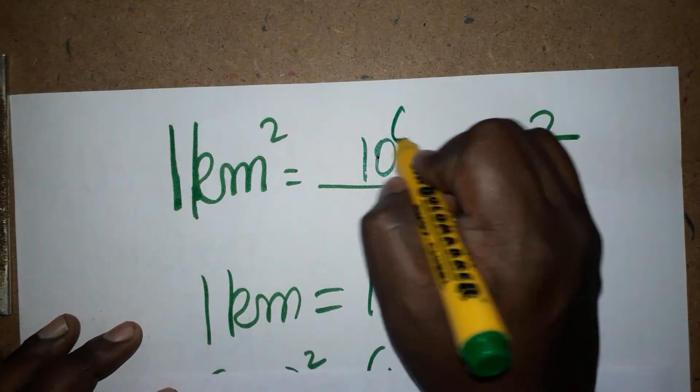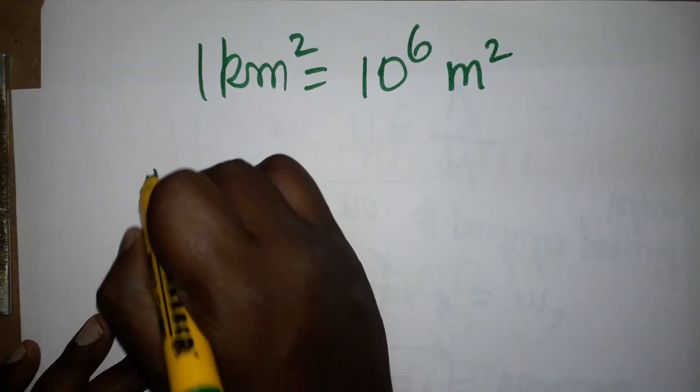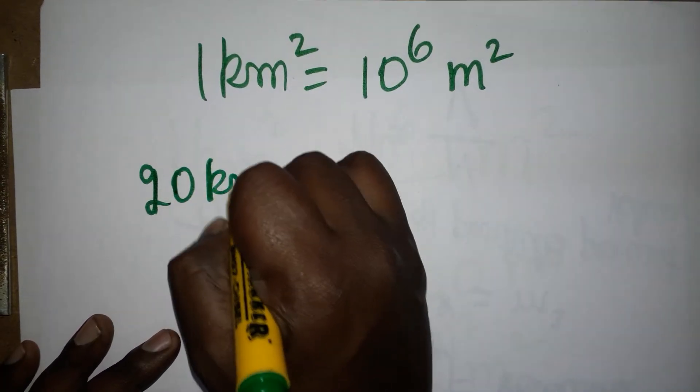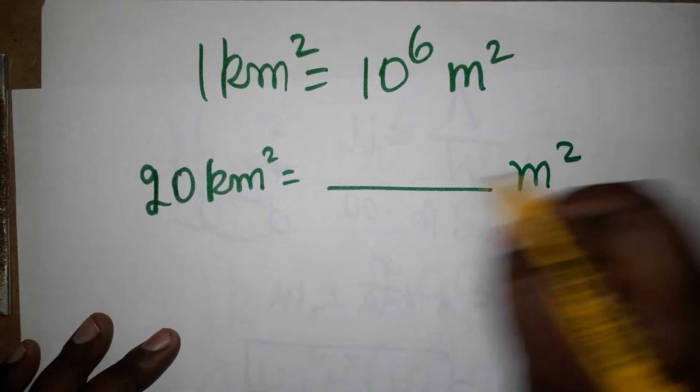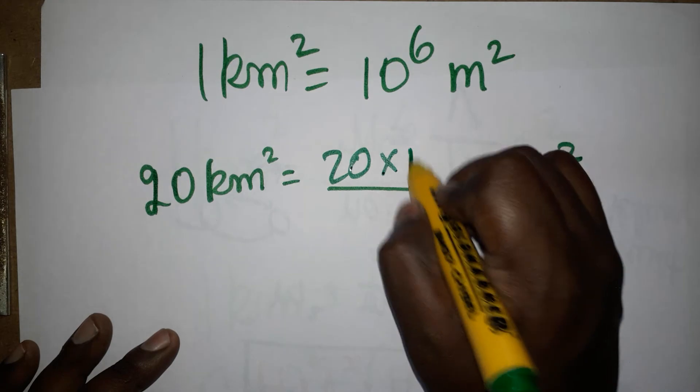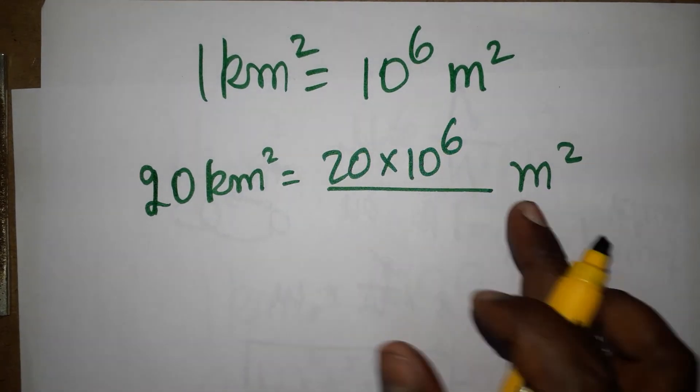If, for example, we have 20 kilometer square is equal to dash meter square, so 20 into 10 power 6 meter square. Very simple. Whatever they are giving, you have to write with 10 power 6.